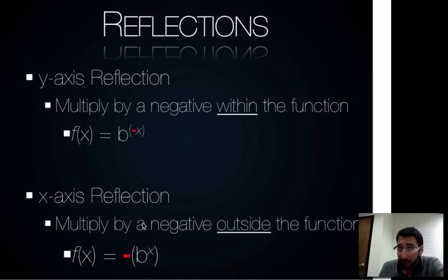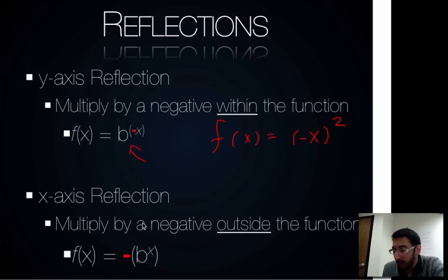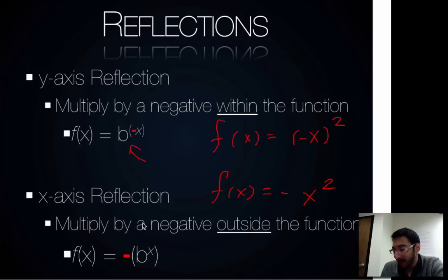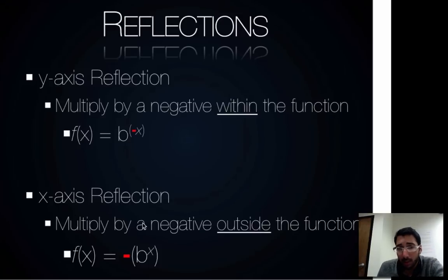Reflections work much in the same way. A y-axis reflection occurs when we multiply by a negative within the function — for example, negative x squared, where the negative sign is up in the exponent next to the variable. An x-axis reflection occurs when the negative is on the outside of the function — not in the exponent — meaning the entire function is being multiplied by a negative. Let's look at a couple of examples.